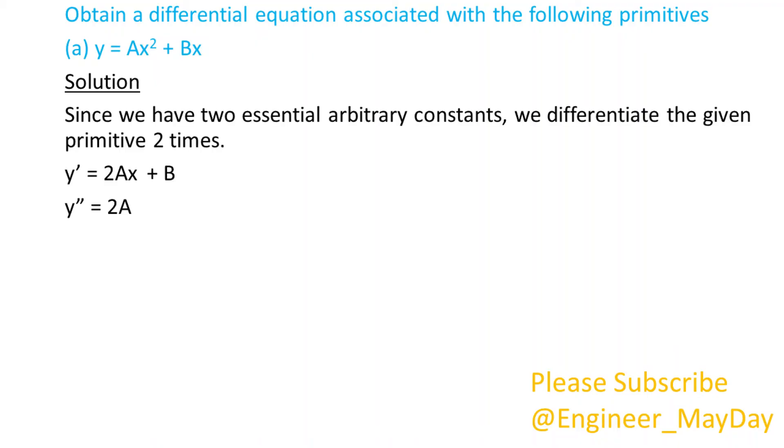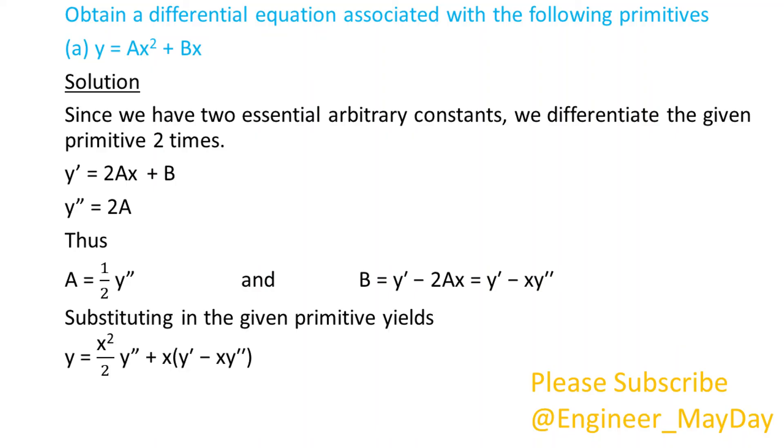Solution. Since we have two essential arbitrary constants, we differentiate the given primitive two times. y prime equals 2ax plus b, y double prime equals 2a. Thus a equals one half y double prime and b equals y prime minus xy double prime. Substituting in the given primitive yields the differential equation.